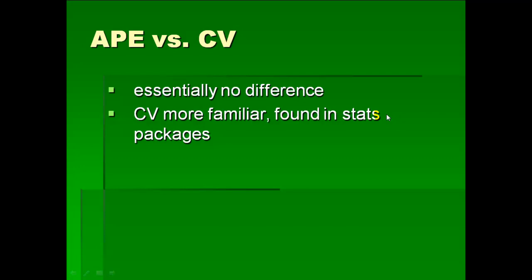The CV I think is more familiar. More people know what the coefficient of variation is, and it's found in a lot of stat packages, so it's already built in. So I think the coefficient of variation is a good way to measure the precision of your estimate.